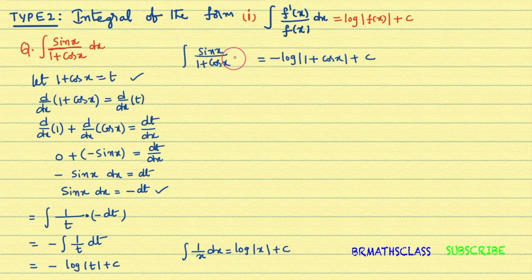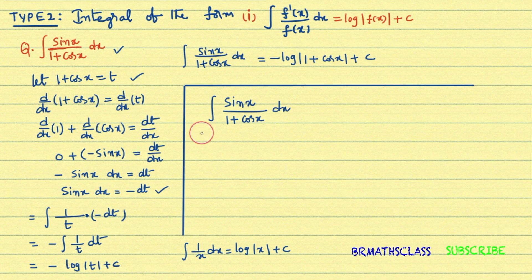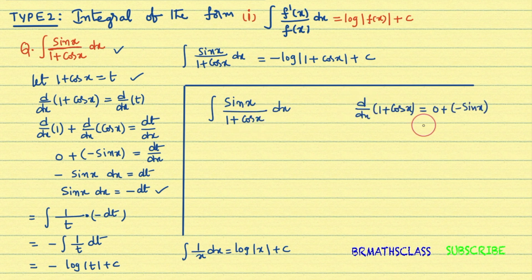I did this problem by the substitution method. Now let's see how to write the answer directly. Observe the question: ∫ sin x / (1 + cos x) dx. The derivative of the denominator (1 + cos x) is −sin x. So the derivative of the denominator is −sin x, but the numerator is sin x — there's a shortage of a minus sign.